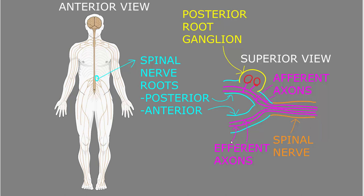Efferent axons, carrying information away from the central nervous system, exit the spinal cord in the anterior spinal nerve root. Afferent axons, carrying information in toward the central nervous system, enter the spinal cord in the posterior spinal nerve root. Posterior spinal nerve roots have attached ganglia called posterior root ganglia, or for the singular, one posterior root ganglion.